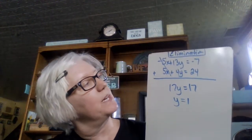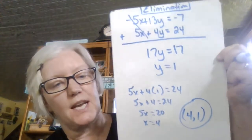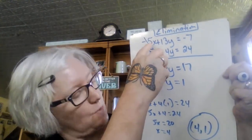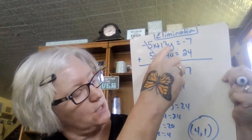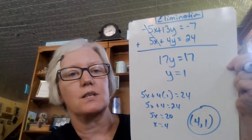Now take y equals 1 and plug it back into either equation. Using the second equation: 5x plus 4 times 1 equals 24, so 5x plus 4 equals 24, 5x equals 20, and x equals 4. The solution is (4, 1). Checking in the first equation: negative 5 times 4 is negative 20, plus 13 times 1 is 13, and negative 20 plus 13 is negative 7. It works.